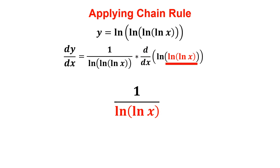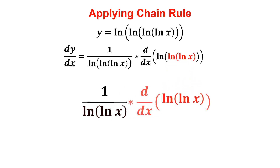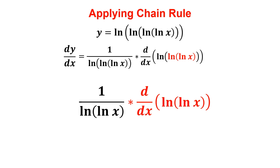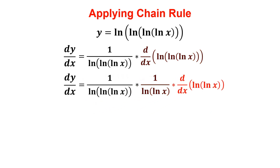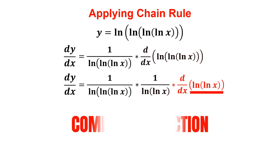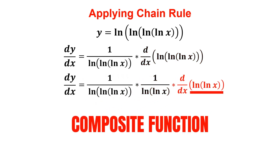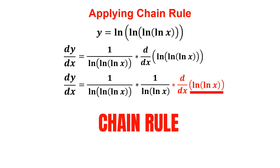We then multiply by the derivative of the inner function. Our inner function is now natural log of ln x, so we multiply by its derivative. This is yet another composite function, so to find its derivative we apply the chain rule one more time.